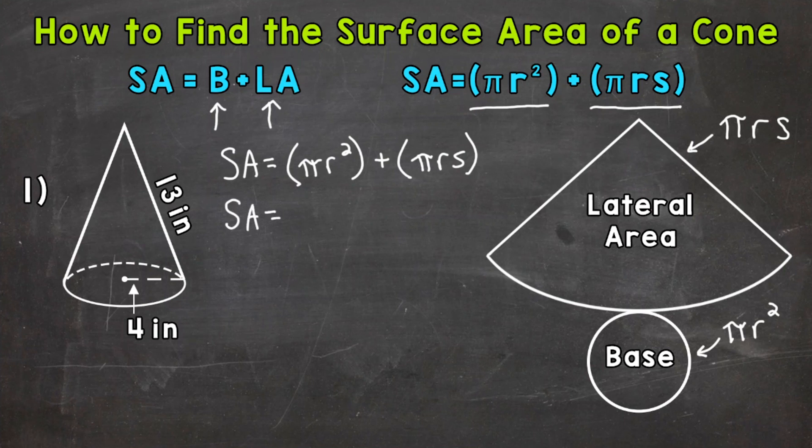So surface area equals pi radius of 4 inches, and that is squared, plus pi times the radius of 4 times the slant height of 13. And now we're ready to solve.